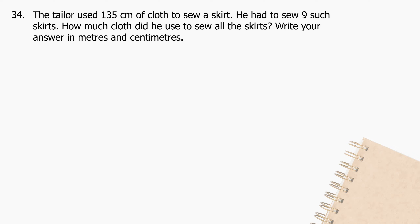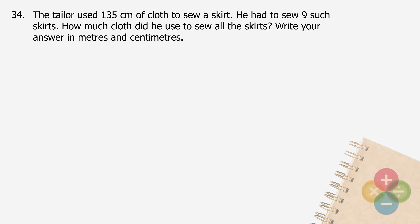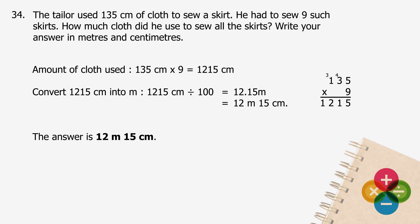Question 34: The tailor used 135 centimeters of cloth to sew a skirt. He had to sew nine such skirts. How much cloth did he use to sew all the skirts? Write your answer in meters and centimeters. The amount of cloth used will be 135 cm multiplied by 9, and the product is 1,215 centimeters. Converting 1,215 centimeters to meters by dividing by 100 gives 12.15 meters, which is equal to 12 meters 15 centimeters.